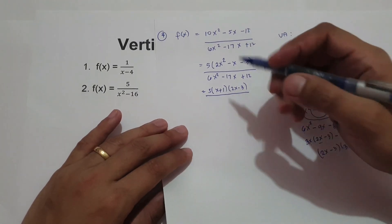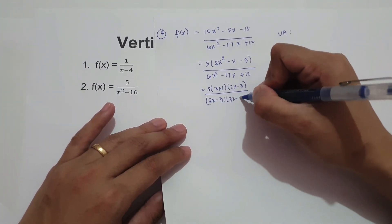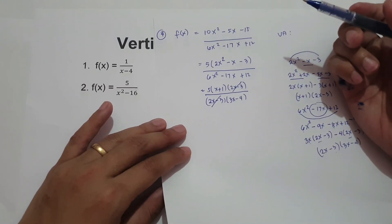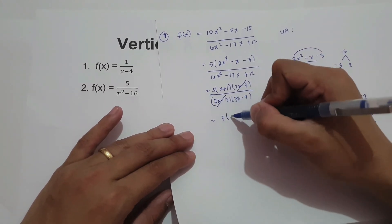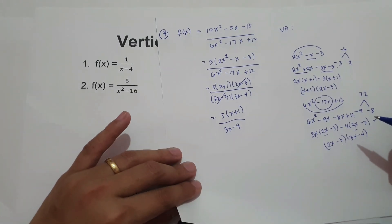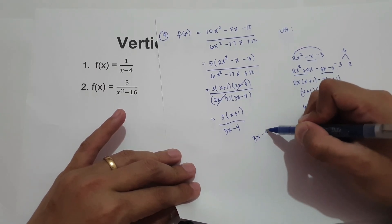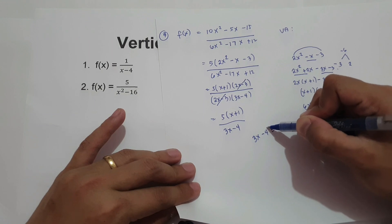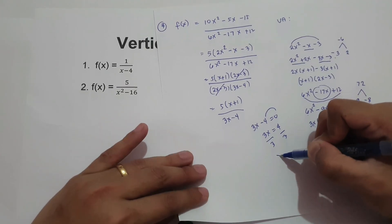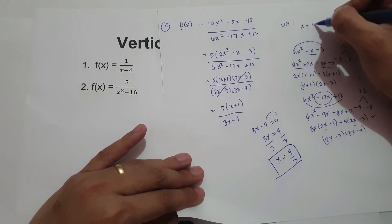We now write the denominator as 2x minus 3 times 3x minus 4. We can cancel 2x minus 3 from the numerator and denominator. That leaves 5 times x plus 1 over 3x minus 4. To find the vertical asymptote, we equate the denominator to zero: 3x minus 4 equals zero, so 3x equals 4, and dividing both sides by 3 gives x equals 4 over 3. Therefore, our vertical asymptote is 4 over 3.